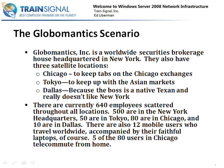Now let's look at the GlobalMantics scenario. GlobalMantics is a worldwide securities brokerage house headquartered in New York, with three satellite locations: one in Chicago to keep tabs on the Chicago exchanges, one in Tokyo to keep up with the Asian markets, and one in Dallas because the boss is from Texas and doesn't like New York. There are 640 employees across all locations — 500 in New York, 50 in Tokyo, 80 in Chicago, and 10 in Dallas. There are also 12 users who travel worldwide with laptops and need to connect remotely.